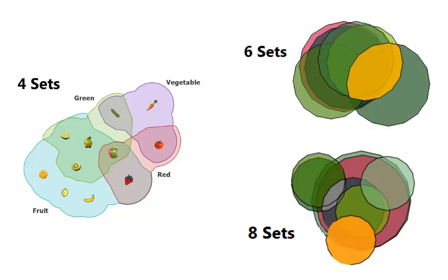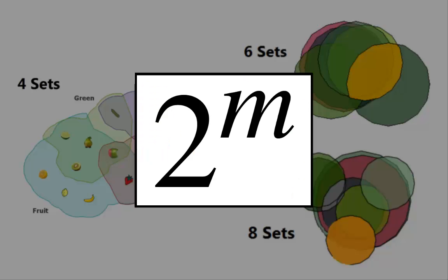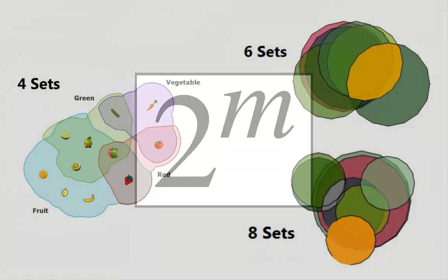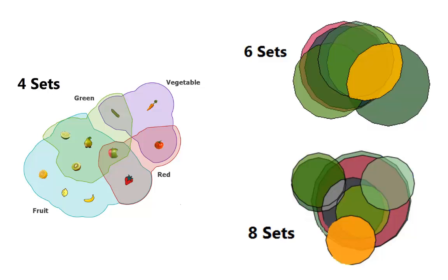This is because the number of possible overlaps grows exponentially with the number of sets, which exceeds the topological constraints of these diagrams.